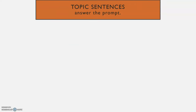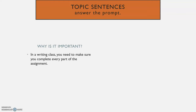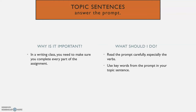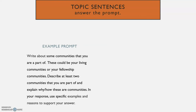Next, your topic sentence needs to answer the prompt, if you're in a writing class. You need to make sure that you complete every part of the assignment — read the prompt very carefully, especially the verbs, and use any key words from that prompt in your topic sentence. Here's an example prompt from your short write assignment: "Write about some communities that you are part of. These could be your living communities or your fellowship communities. Describe at least two communities that you are part of and explain why or how these are communities. In your response, use specific examples and reasons to support your answer." Some key words here are "communities," key verbs are "describe" and "explain," and the word "two" is important — you need to describe two communities, not one, not three, two.